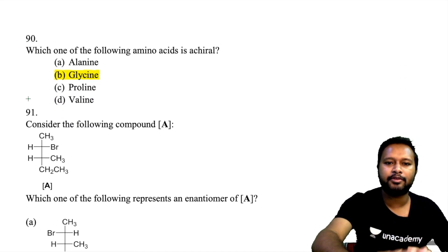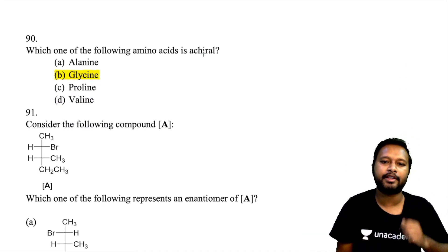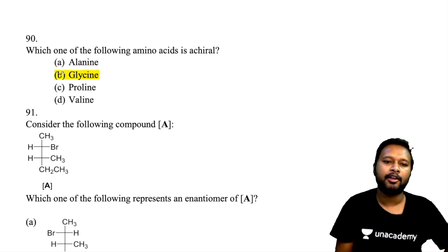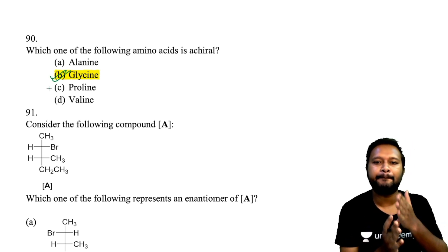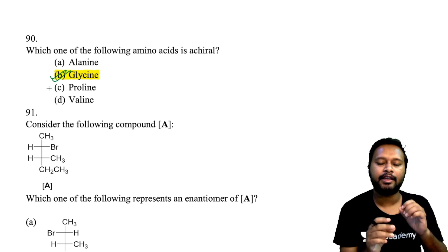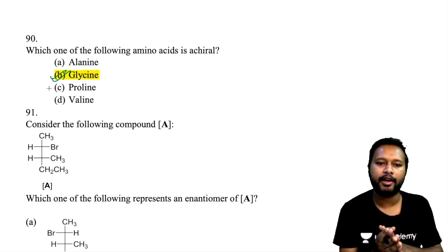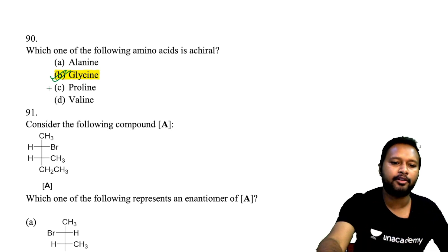Question 90 asks which amino acid is achiral. Glycine has a plane of symmetry, making it achiral. This is a direct, straightforward question.